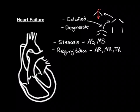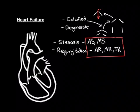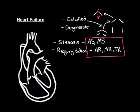Let's discuss how aortic stenosis, mitral stenosis, aortic regurgitation, mitral regurgitation, and tricuspid regurgitation can lead to heart failure if they become severe. Starting with aortic stenosis: the left ventricle is no longer able to pump against that stenotic aortic valve effectively, leading to reduced cardiac output and heart failure. That's an example of left heart failure, which may lead to pulmonary oedema.